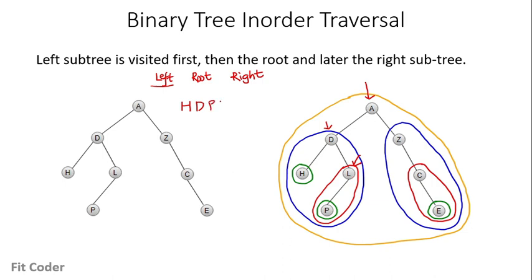Then we visit the root. Now this entire subtree is done, so we visit the root A, then we visit the right subtree. For the right subtree there is no left node, so all of these are roots. It will be Z, C, E. This is the in-order traversal result.